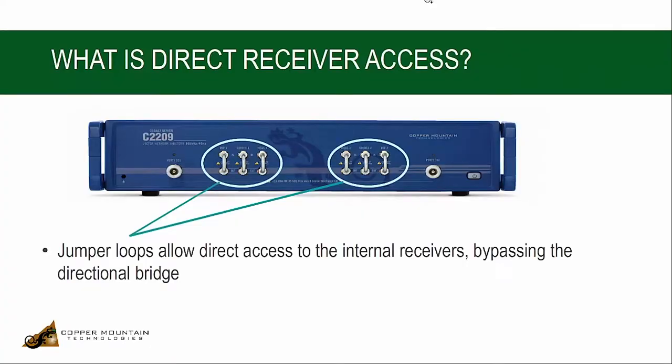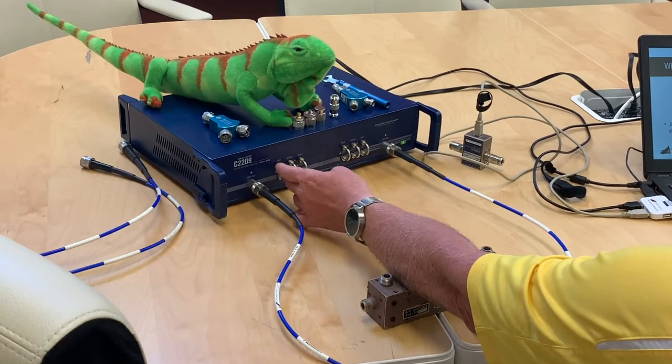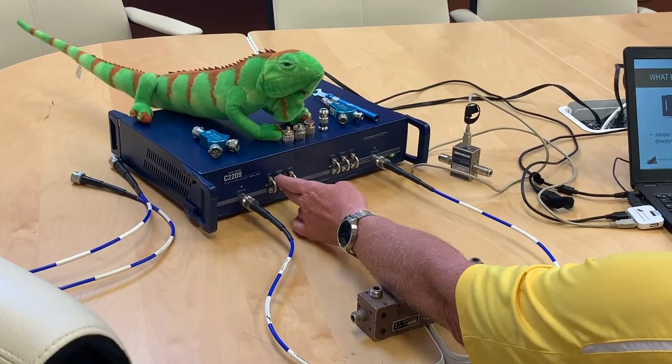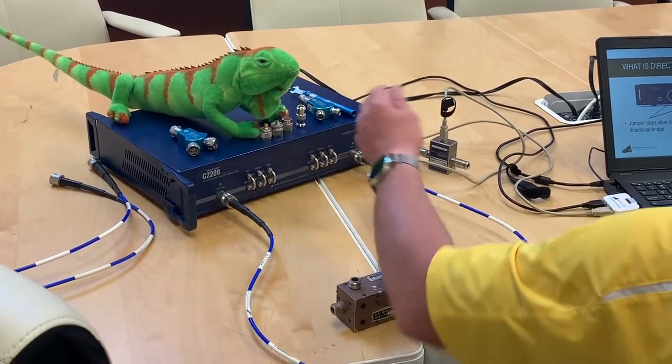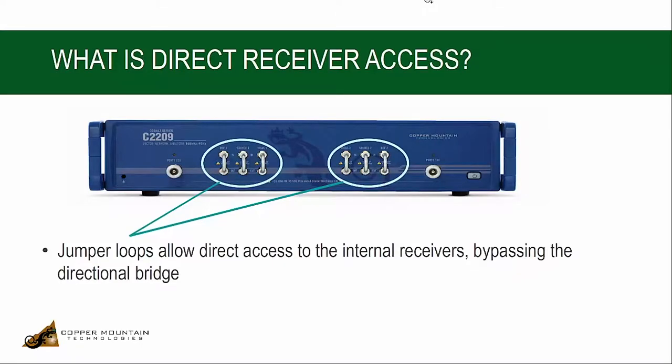If you look at the VNA, you can see on the front that there are six jumpers. There's the jumper for the incident signal, a jumper for the stimulus, a jumper for the reflective signal, and matching jumpers on the other side. So where do they connect?